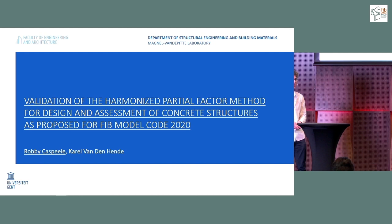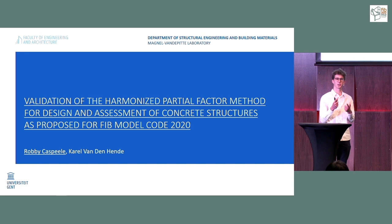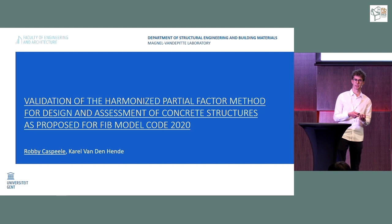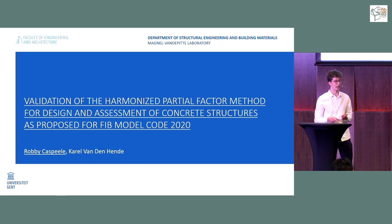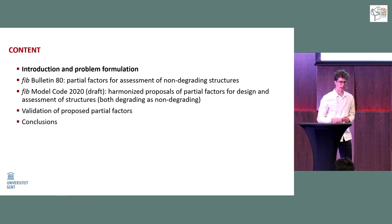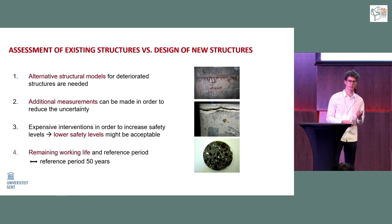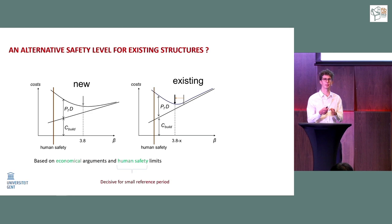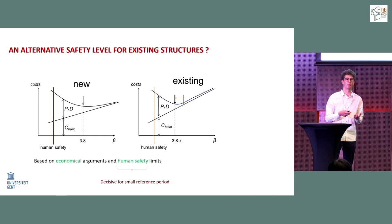When I talk about partial factors, I think everyone in this room knows the values 1.5, 1.35, and 1.15 — these are the values we use to design new reinforced concrete structures. These values are based on a certain level of safety, which is mostly expressed as a target reliability index, beta, directly connected to a certain probability of failure.